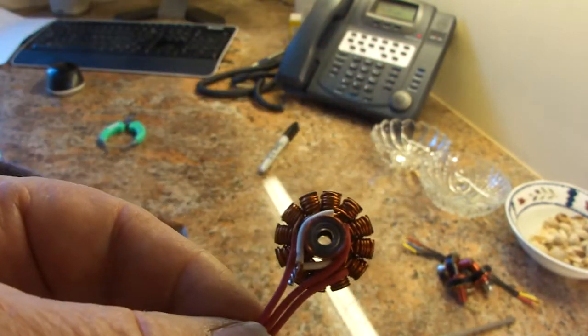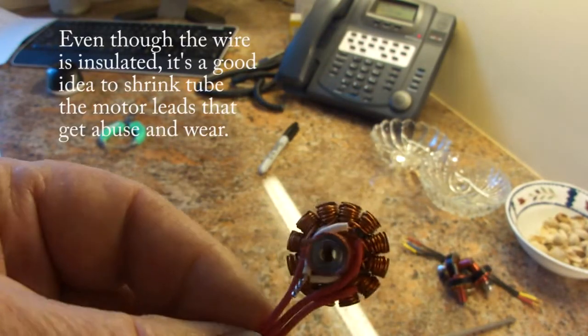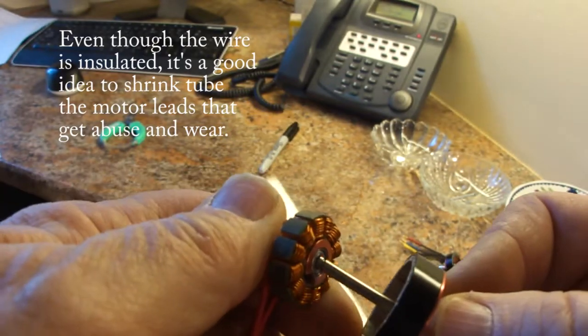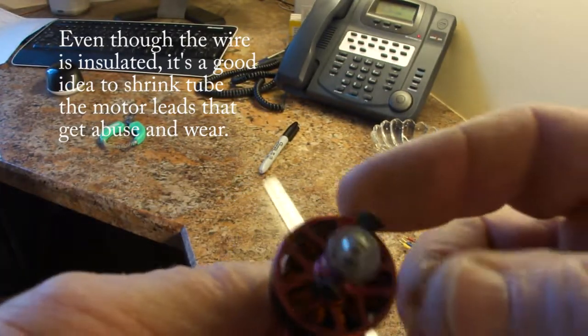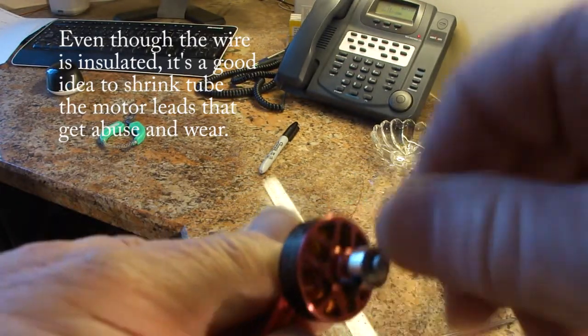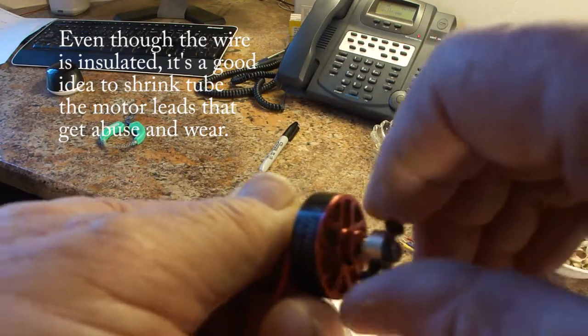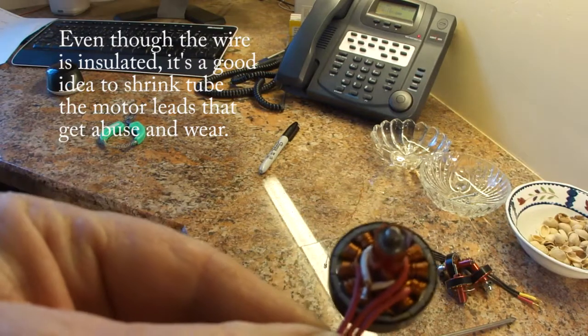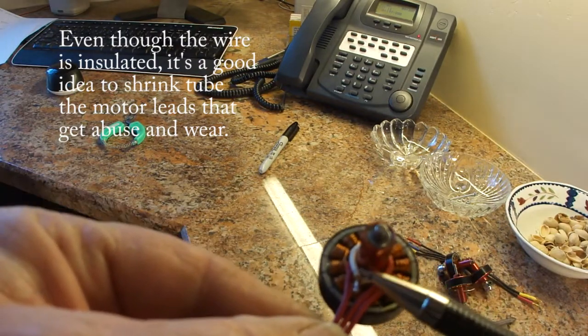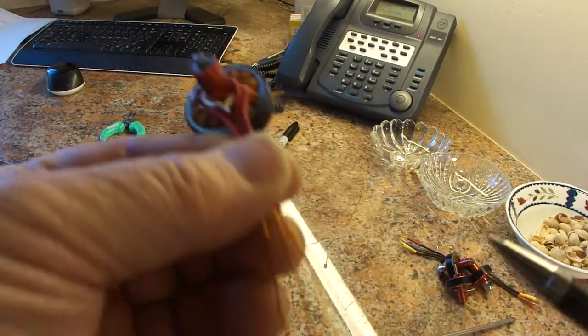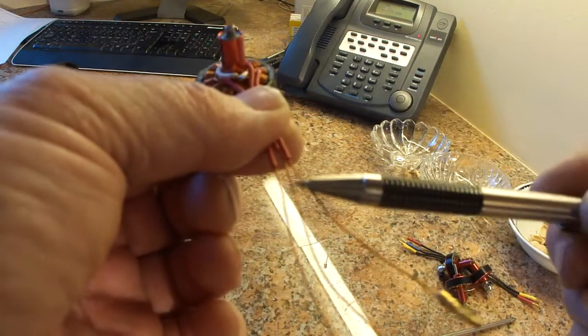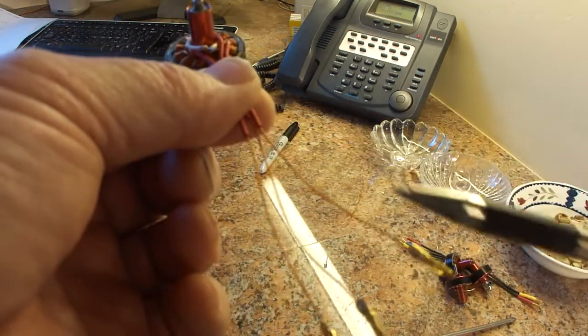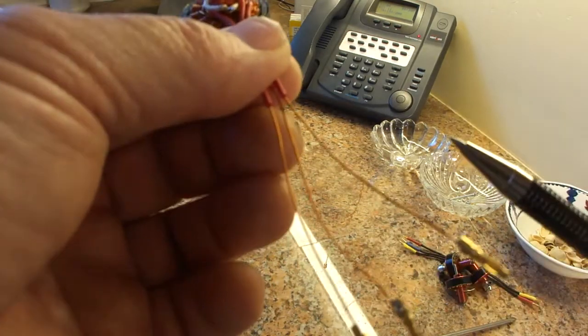So now all we need to do is make sure that we don't have any rubbing. We look at the front of the motor and it looks like nothing's rubbing there. So we're good. So we're going to put the rest of the shrink tube on. We'll put a little more shrink tube right around here. And we'll get some shrink tube around these wires. And then maybe one larger shrink tube to pull them all together.